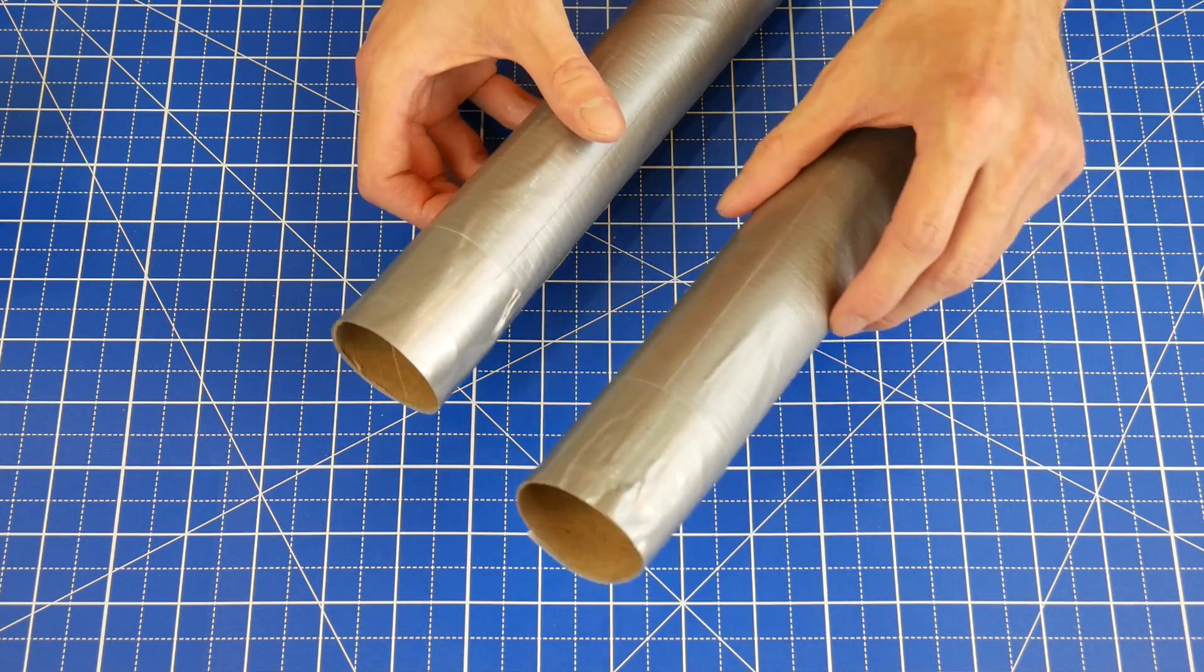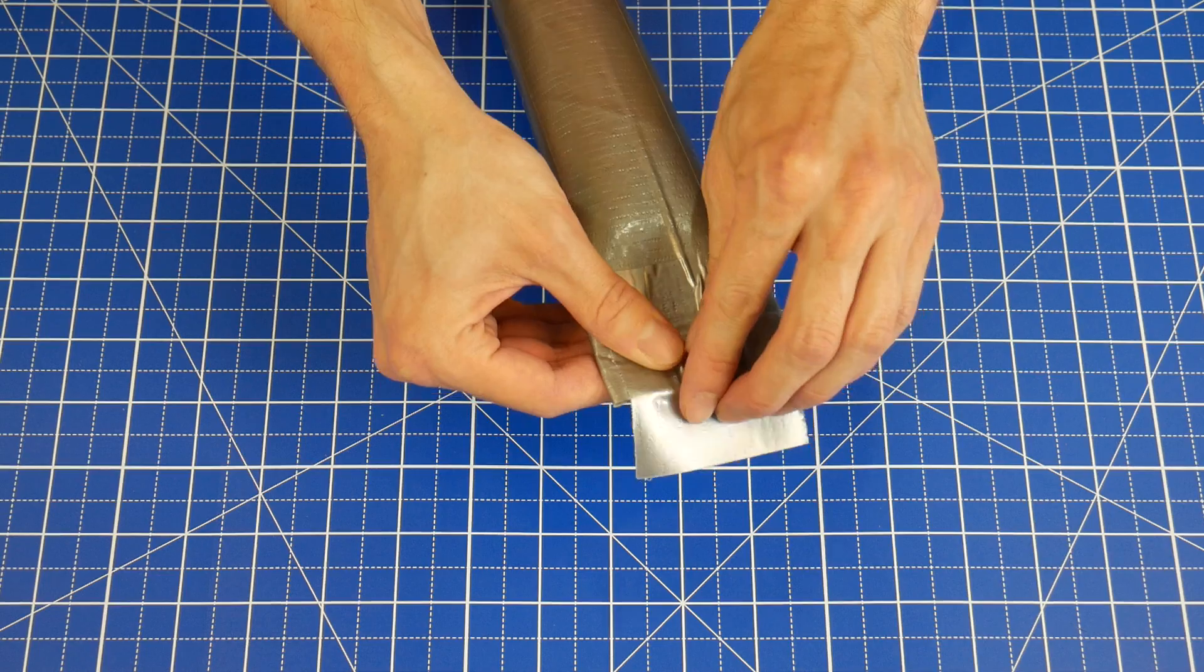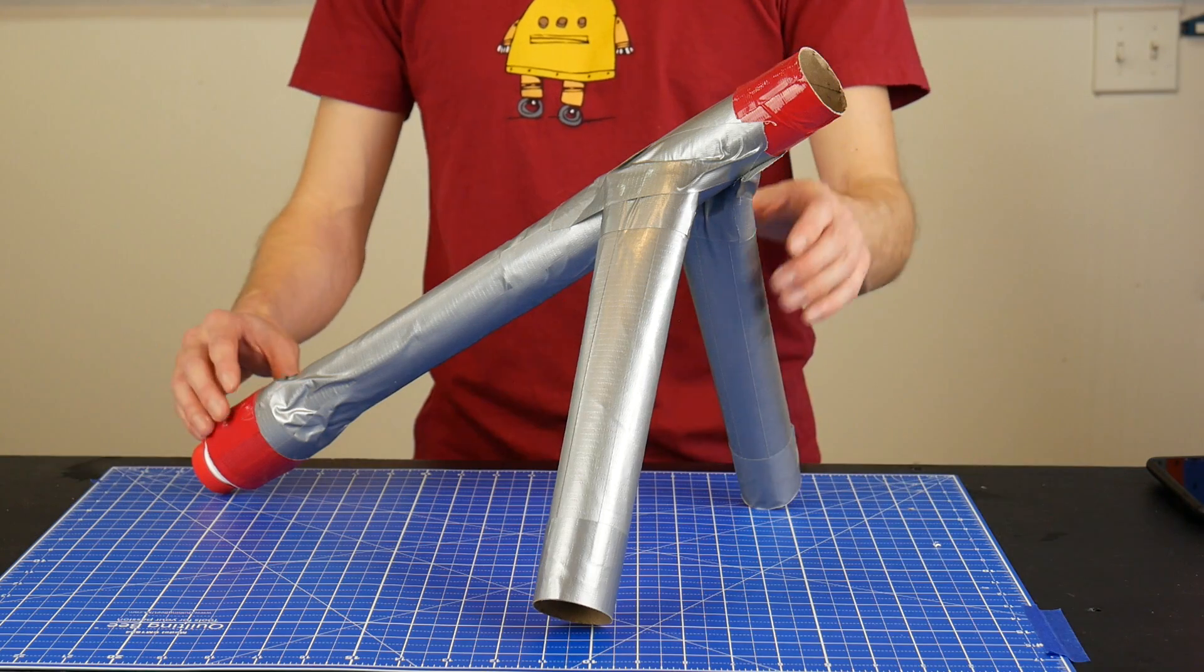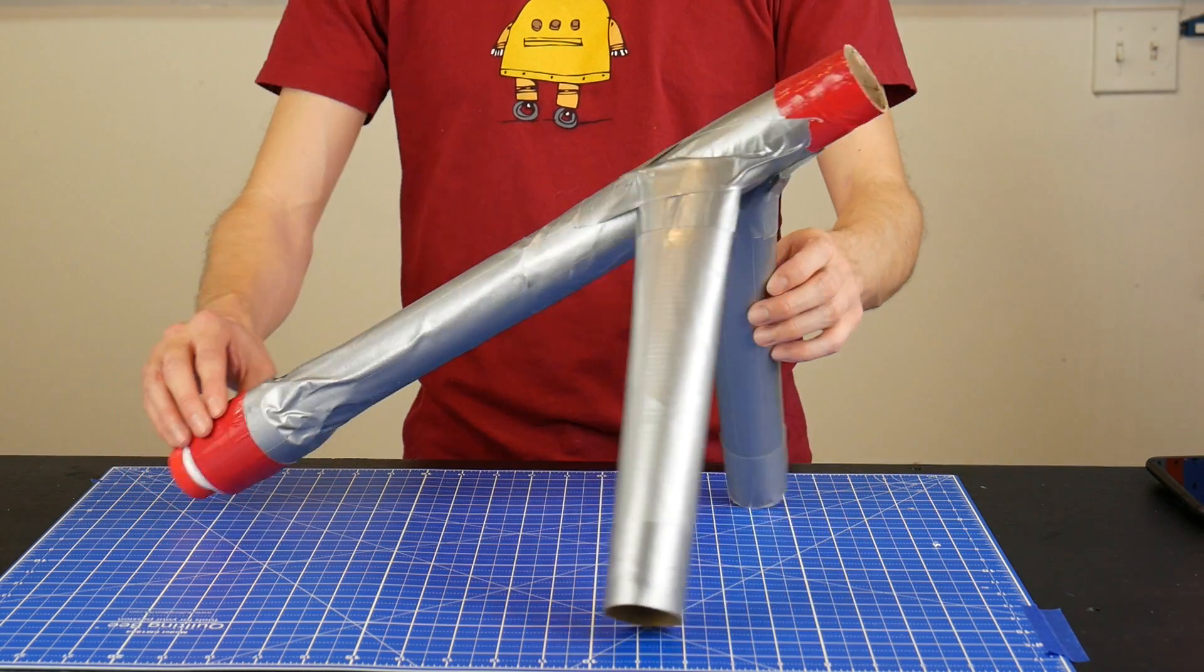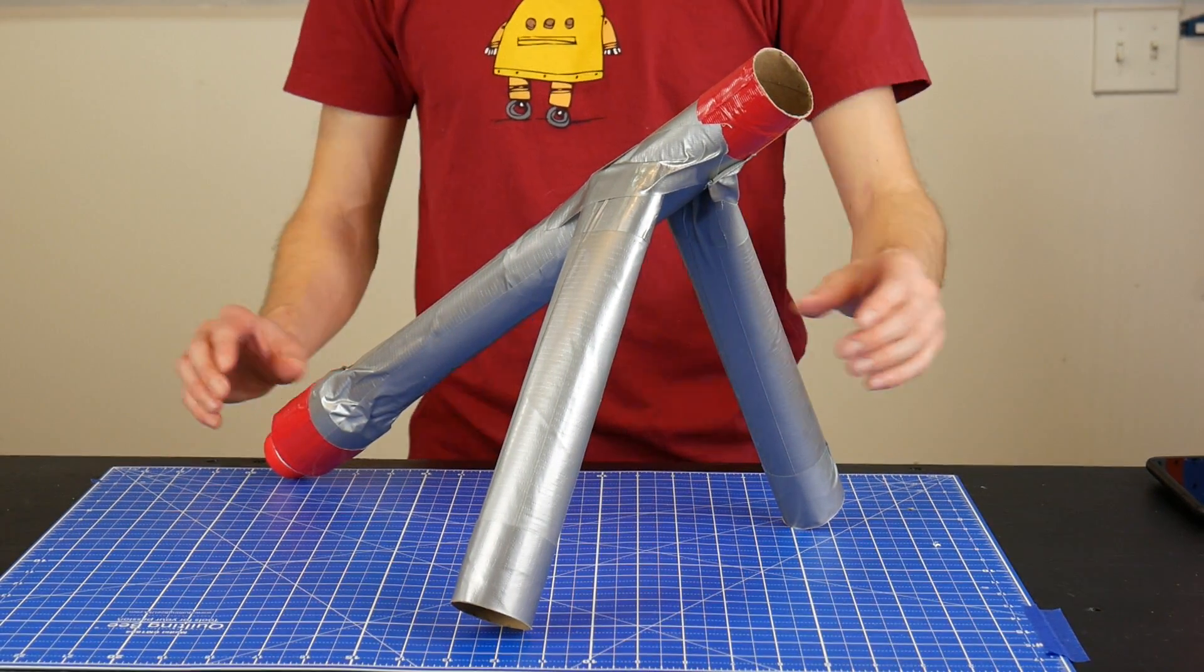Cover two more tubes in tape just to match the barrel. Pinch one end flat, and tape it. Tape the flat end of both tubes onto the barrel so it holds it up at about a 45 degree angle. This will give you the farthest flying trajectory.